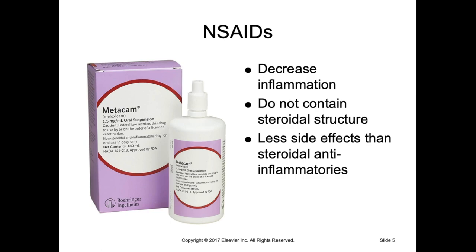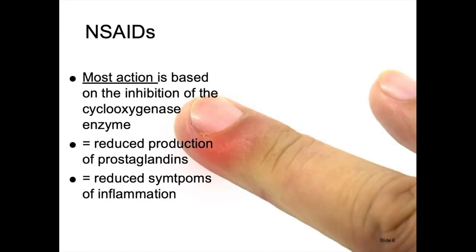Non-steroidal anti-inflammatory drugs decrease inflammation like corticosteroids but don't contain the molecular steroid ring structure and don't have many of the negative side effects of glucocorticoids. NSAIDs are among the most rapidly expanding group of drugs used by veterinarians. Many came from human medicine because humans are more sensitive to glucocorticoids and needed an alternative. The majority of NSAID action is based on inhibition of cyclooxygenase, reducing prostaglandin production and thus reducing inflammation symptoms.